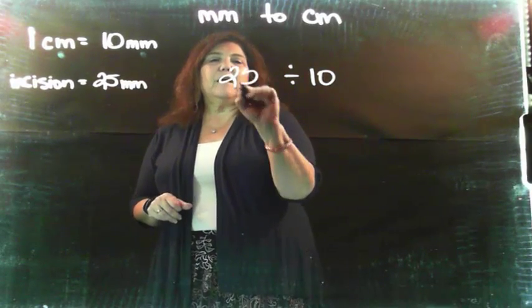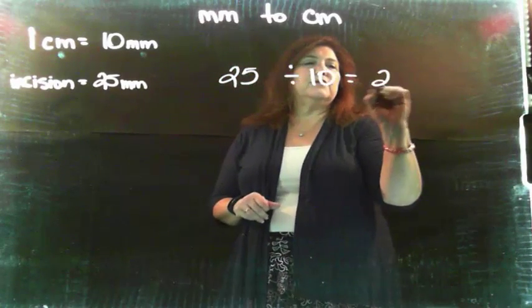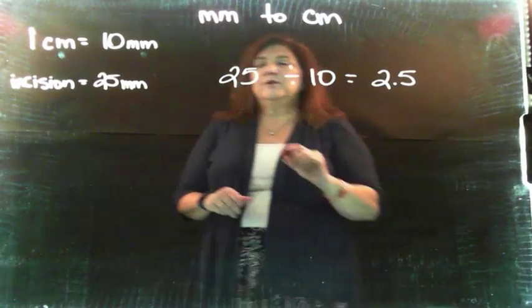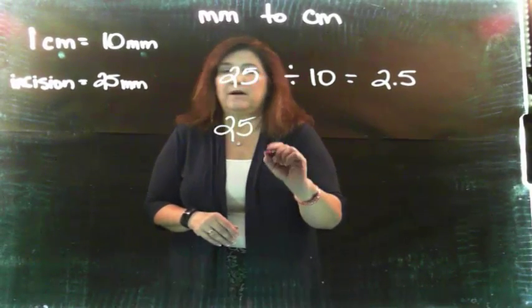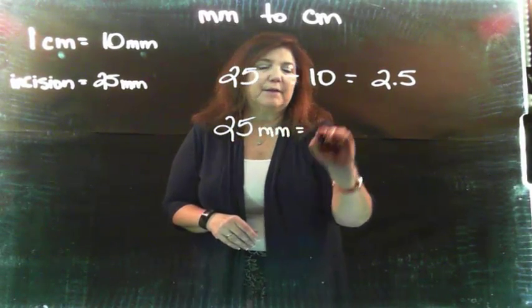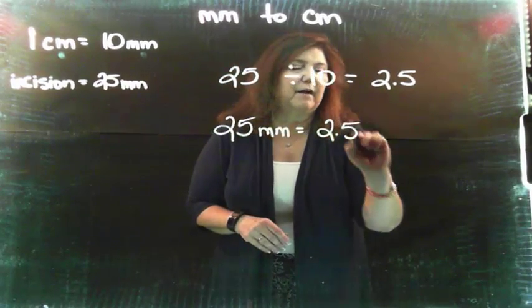So I have 25 divided by ten, which is going to give me 2.5. So 25 millimeters is the same thing as 2.5 centimeters.